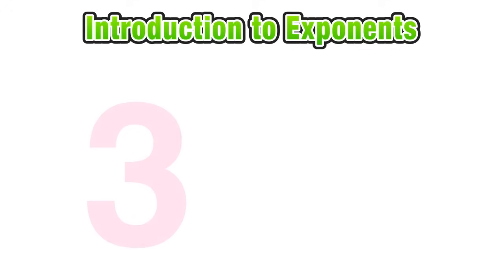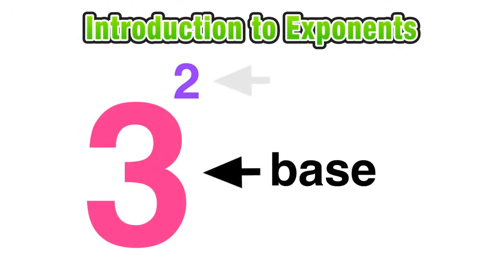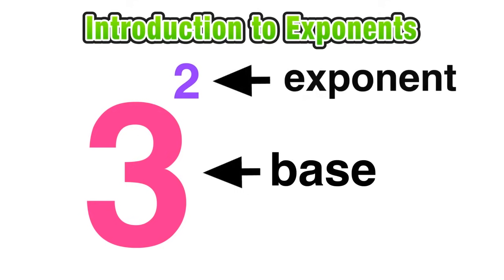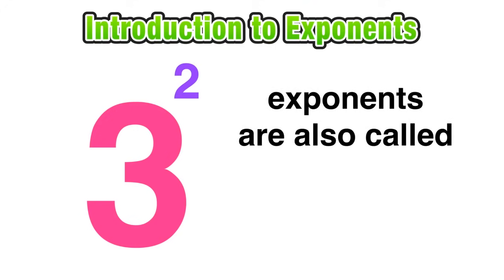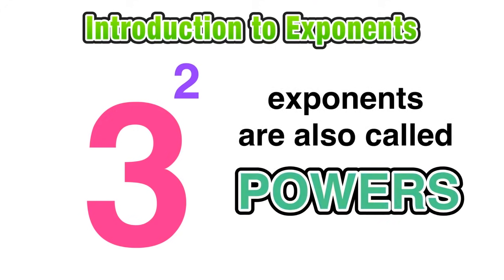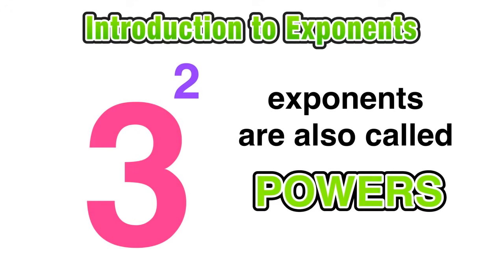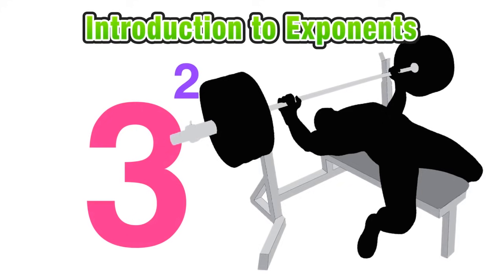So now we can extend our thinking to looking at some numbers. Imagine if we had 3 with a little 2 up at the top right hand corner. This notation says that 3 is the base value and 2 is the exponent. We should also note that exponents are also called powers. So for this example we could say 3 to the power of 2 or 3 raised to the power of 2.